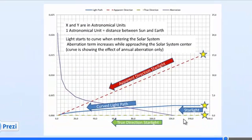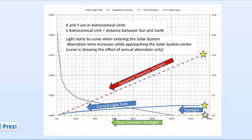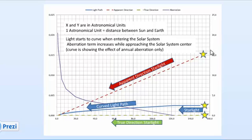We can see this in a simulation with Excel. We have starlight — this is the true direction of starlight — and if we simulate it, what happens is that starlight follows a curved path. At the position of the Earth, it looks as if the star is coming from a different direction. It's not to scale, but it shows the principle: starlight comes from one direction, follows a curved path, and appears to come from a different angle.